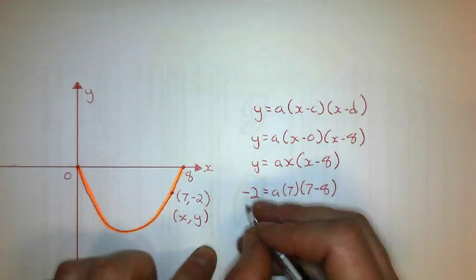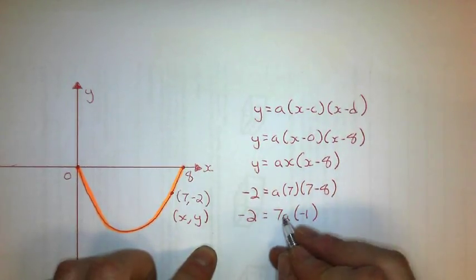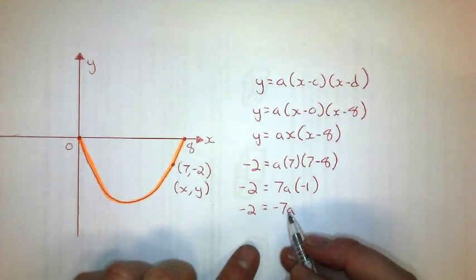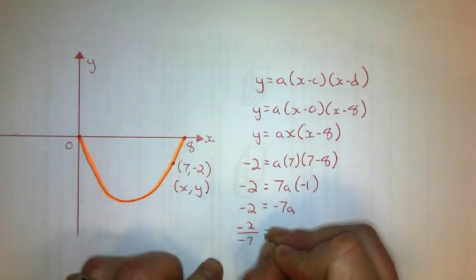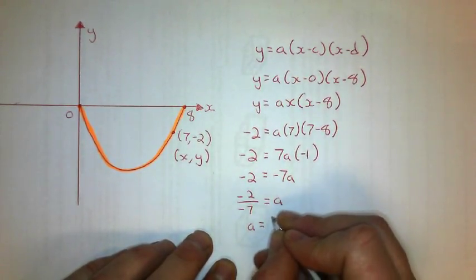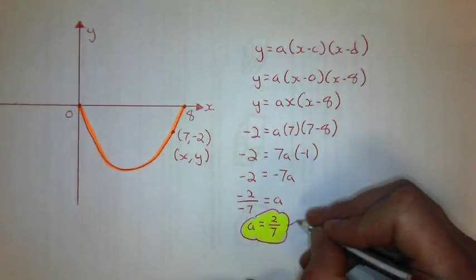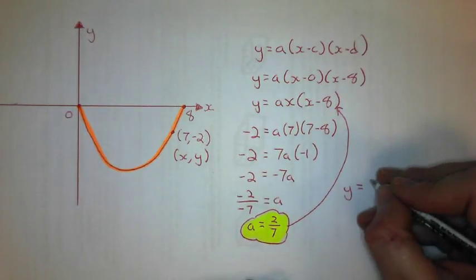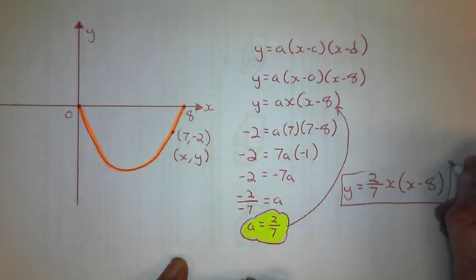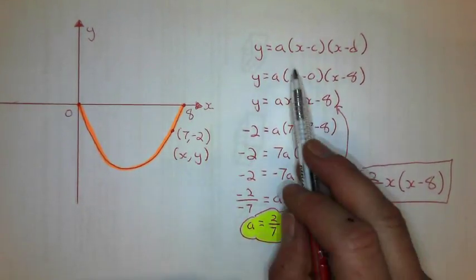Now I do the same steps as before, but instead of substituting the y-intercept, I substitute the point (7, negative 2). So y is negative 2, x is 7 in both places. Simplifying the right side: 7 times a is 7a, and 7 minus 8 is negative 1, so I get negative 2 equals negative 7a. Dividing negative 2 by negative 7 — a negative divided by a negative is positive — gives me a equals two sevenths. Substituting back: y equals two sevenths x times x minus 8.